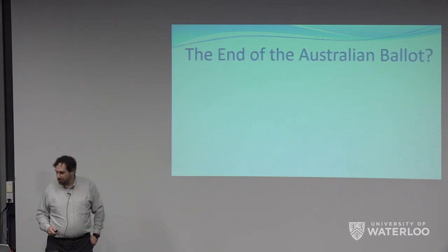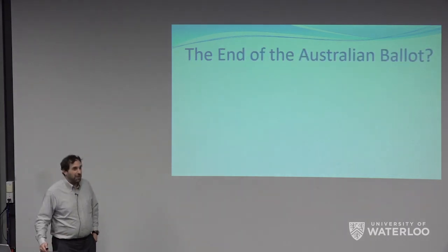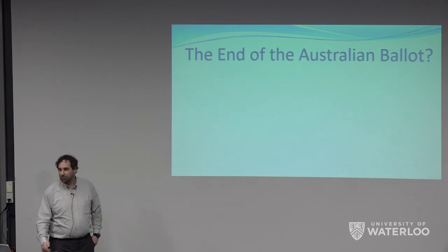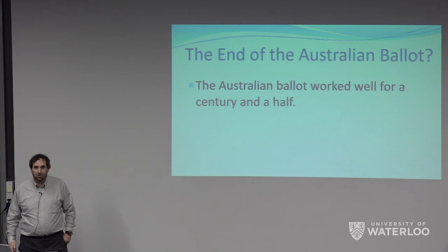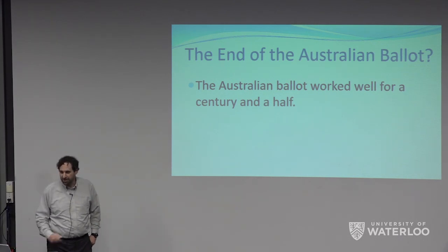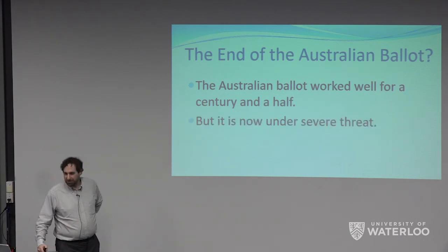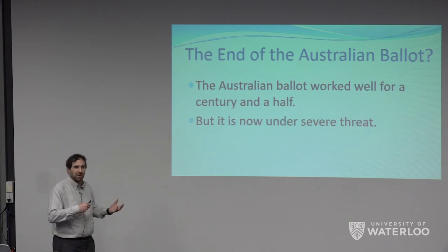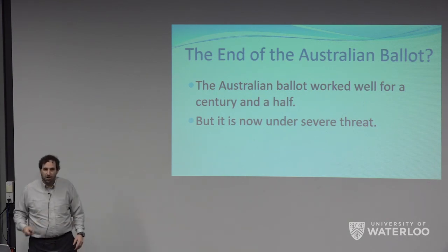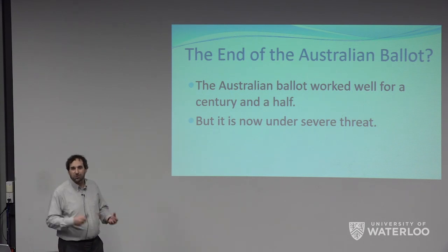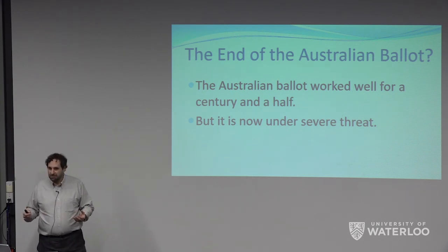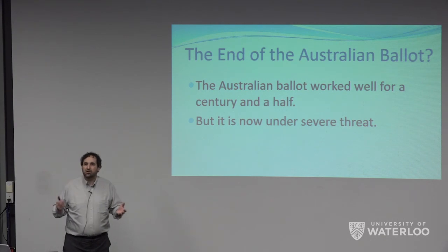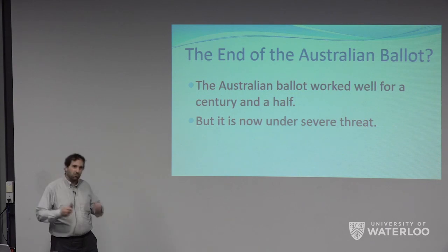Now we have a problem. The secret ballot may be under great threat, even though it's worked for well over a century and a half. One of the threats is the sort of laxness around in-person voting. My home state of Washington is a vote-by-mail state. Pretty much everybody votes by mail — you receive a ballot by mail automatically, you send it back or drop it off. But you're voting at home.